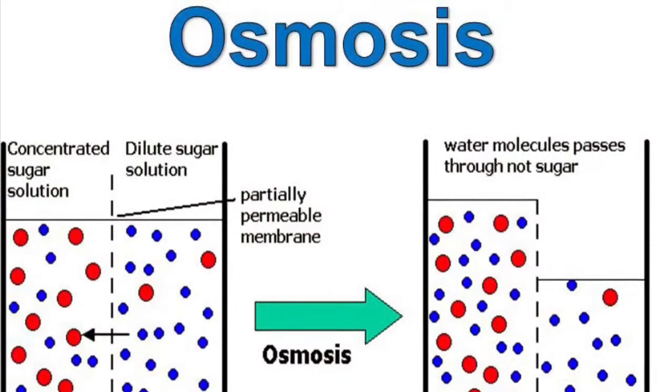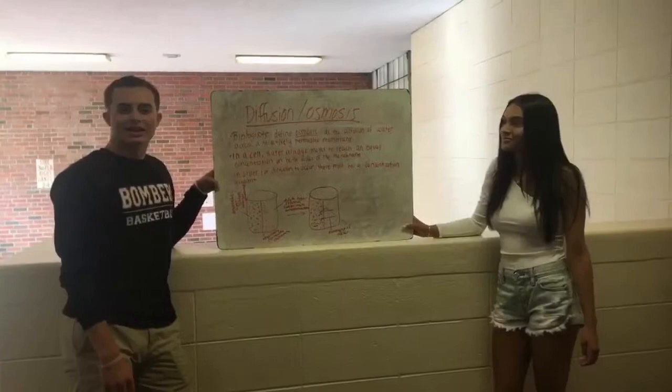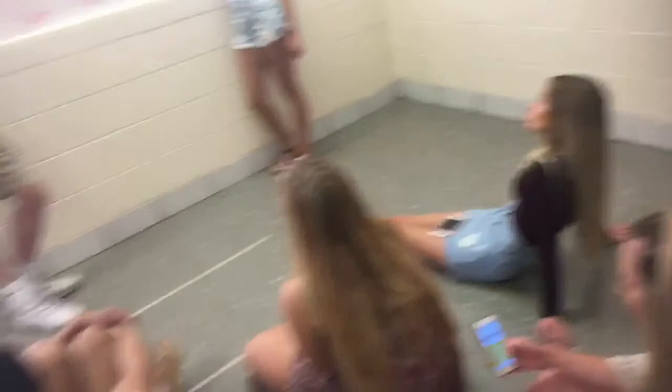In Chapter 2, we will be learning about diffusion and osmosis. Biologists have defined osmosis as the diffusion of water across a selectively permeable membrane. In a cell, water always moves to reach an equal concentration on both sides of the membrane, moving from high to low concentration.